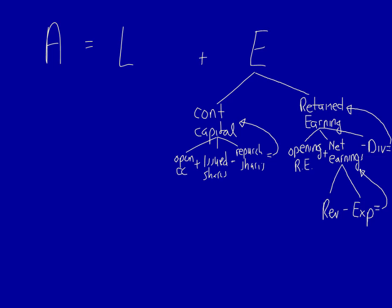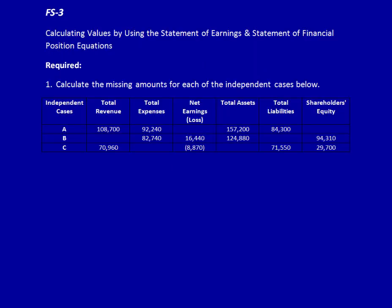If we look back at the information we were given, we see we have total revenue, total expenses, and net earnings. We can plug this into the equation revenues minus expenses equal net earnings. In addition, we have total assets, total liabilities, and shareholders' equity. In this case, we can plug it into the basic accounting equation and solve for the unknown numbers. Let's do that for all three.